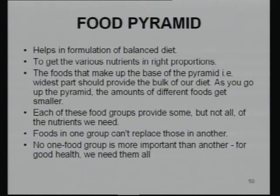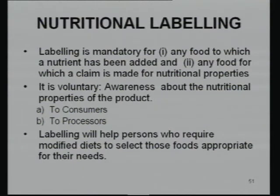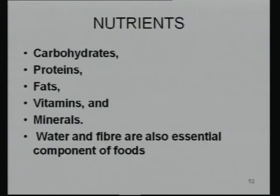A food pyramid is used to prepare a balanced diet — you must know how to use it. Nutritional labeling is becoming an important component: labeling must be done when nutrients are added or nutritional claims are made. It helps consumers identify what they are eating and processors understand what their product contains.